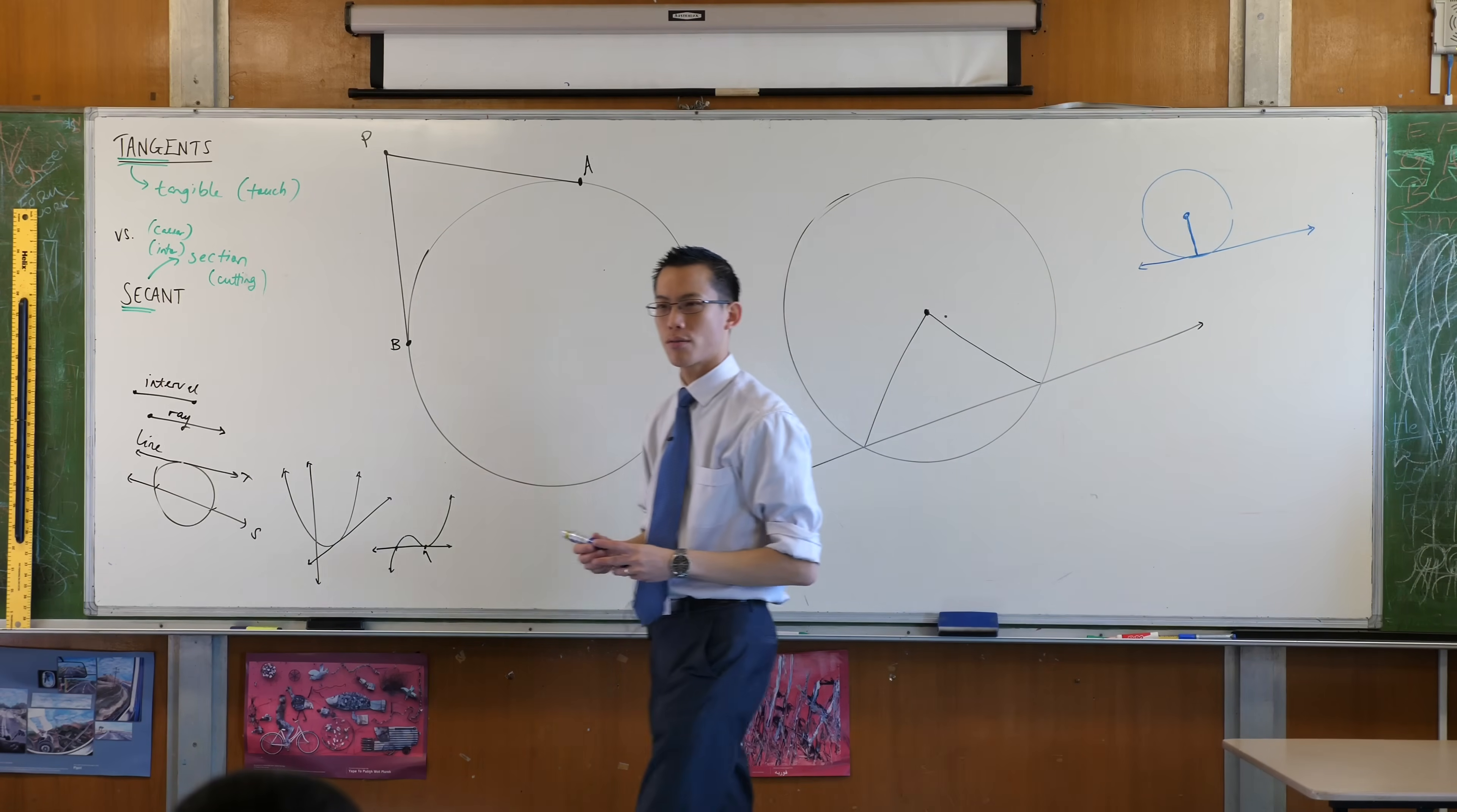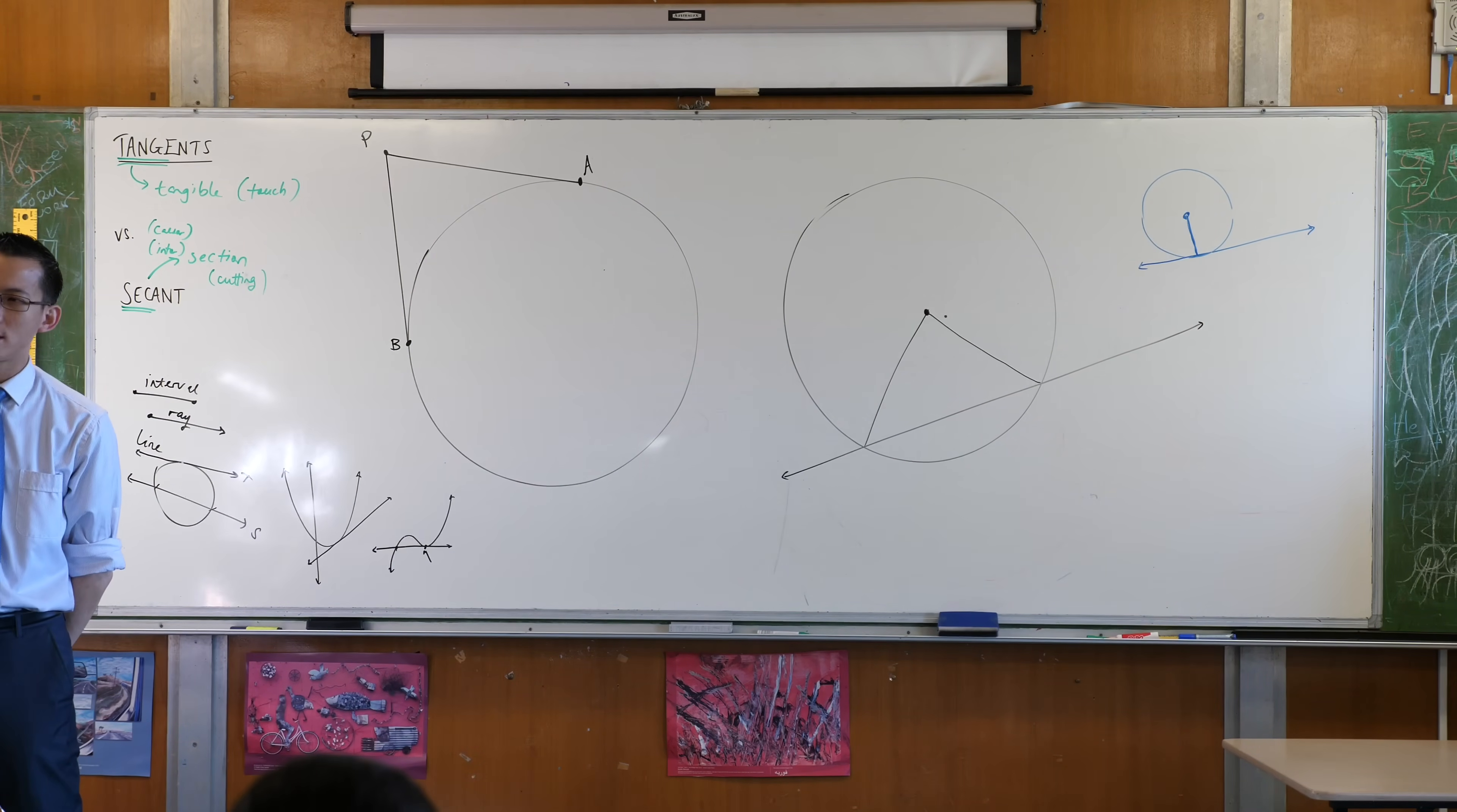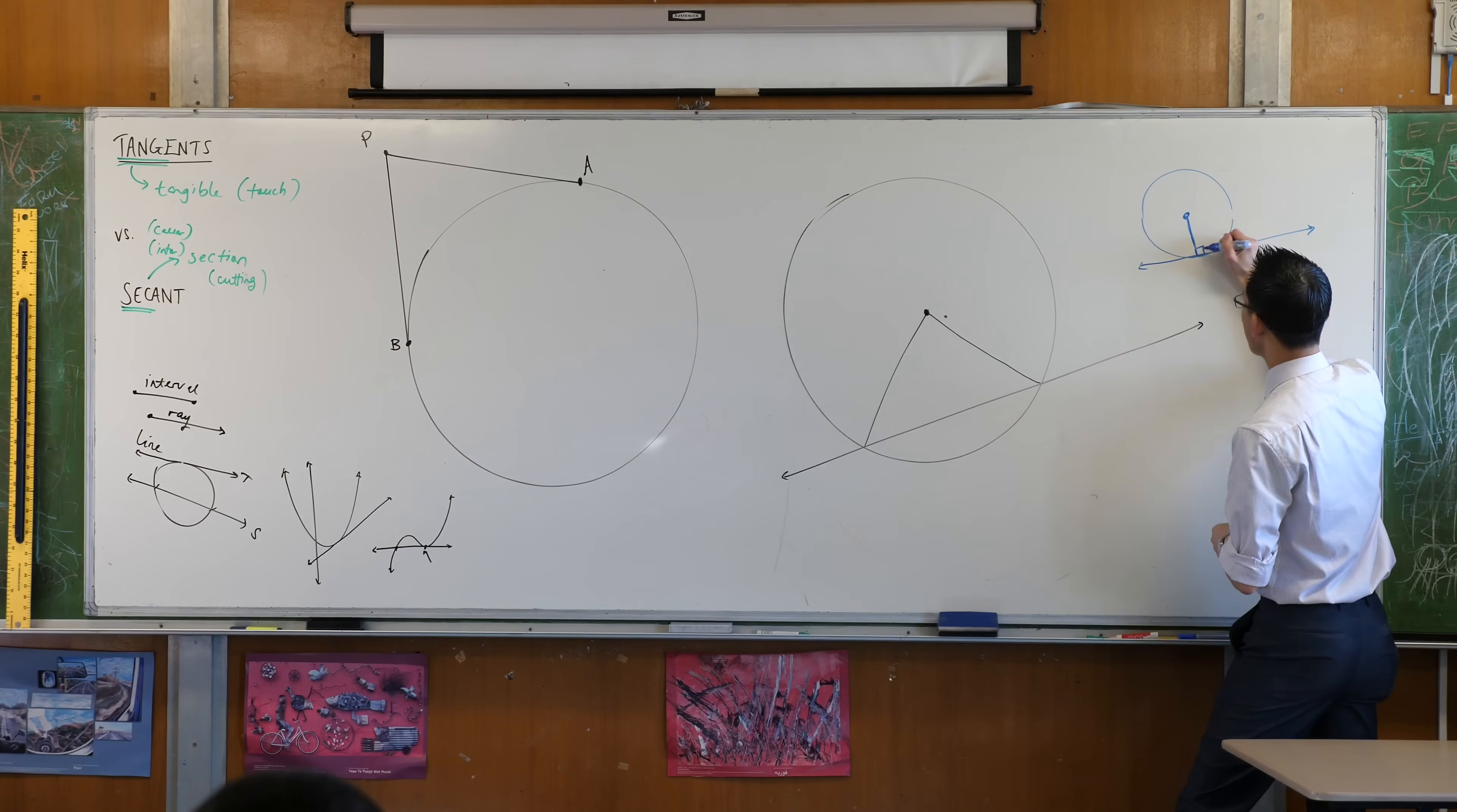The radius and the tangent are related to each other. They're not just out in any random direction. What does the angle look like between the radius and the tangent? What's it look like? It looks perpendicular, doesn't it? It looks like it's a right angle.